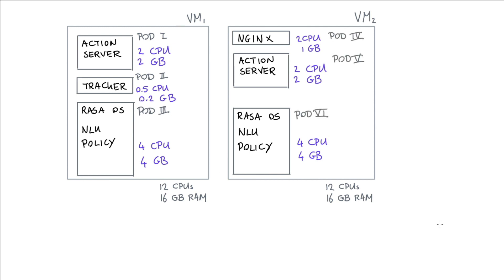Kubernetes allocates VMs to represent these pods — these pods of resources. Given pods at your disposal, which represent resources, you can start thinking about deployments differently. You're no longer thinking in services; rather you're thinking about a deployment happening with some resources. Allocating these pods on VMs is something Kubernetes does for you, but it really helps to have this mental model of what a pod represents.